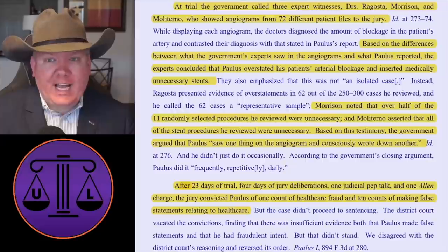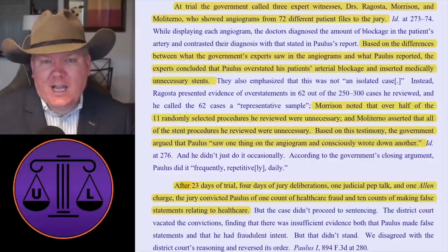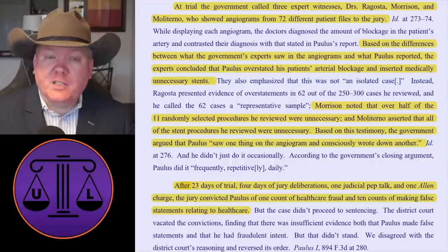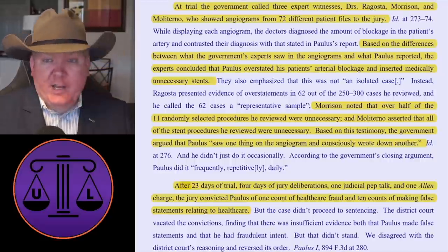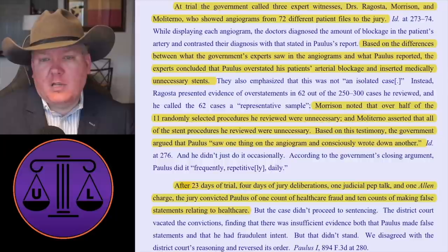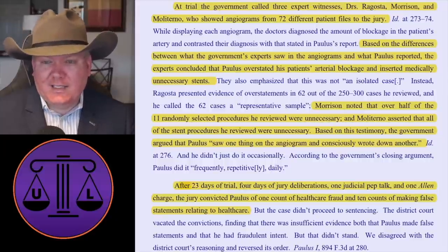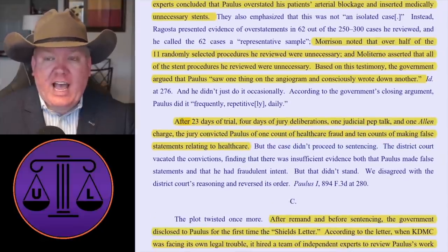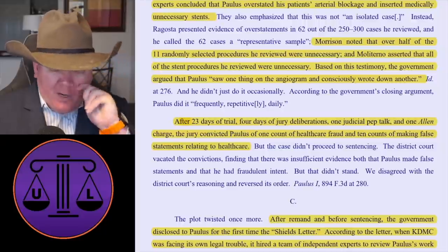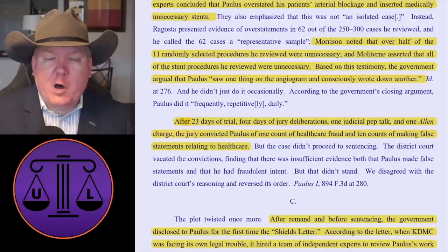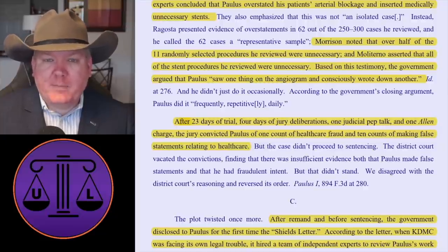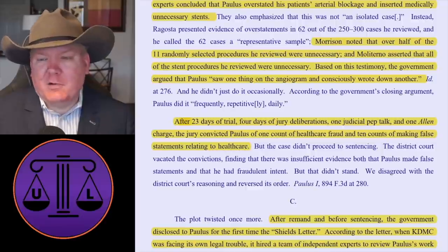At trial, the government called three expert witnesses — Drs. Ragosta, Morrison, and Molterno — who showed angiograms from 72 different patients to the jury. Based on the difference between what the government experts saw in the angiograms and what Paulus reported, the experts concluded that Paulus overstated his patients' arterial blockage and inserted medically unnecessary stents. Morrison noted that over half of 11 randomly selected procedures he reviewed were unnecessary, and Molterno asserted that all the stent procedures he reviewed were unnecessary. Based on this testimony, the government argued Dr. Paulus saw one thing on the angiogram and consciously wrote down another.